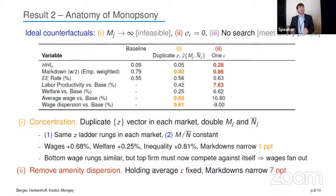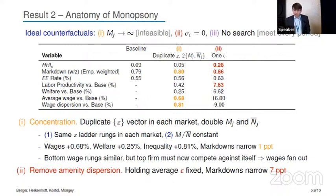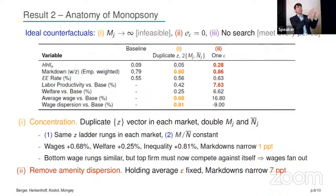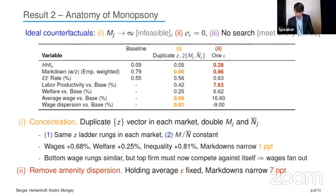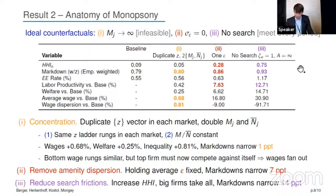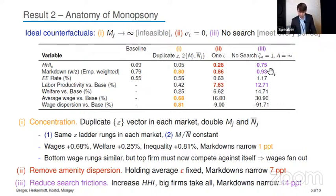In the second experiment, we reduce amenity dispersion to zero while keeping the average amenity fixed. Markdowns narrow significantly by seven percentage points. Interestingly, the Herfindahl triples — workers go to the top and stay there since amenities no longer draw them down the job ladder. As a side effect, productivity rises by almost eight percentage points. In the third experiment, we reduce search frictions, allowing everyone to meet every period. The EE rate more than doubles, the Herfindahl increases, and markdowns narrow by 14 percentage points.